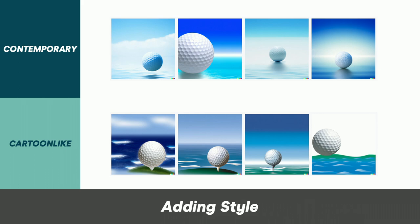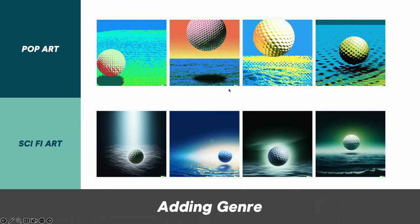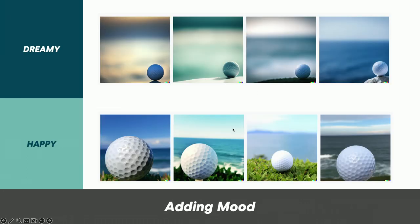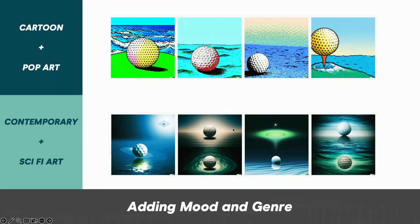Here's 'golf ball ocean' applying a style of contemporary or cartoon-like, and you can already see that when you generate images in DALL-E and MidJourney, it's generally giving you four different prompts to play with. What about those same two words put through a genre of pop art and sci-fi art? Already you can see we're seeing different effects — dreamy and happy. Then we can start combining different moods and genres together to really force different styles on those two words.